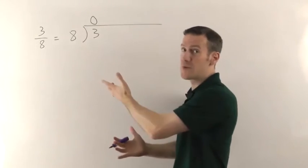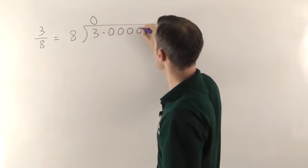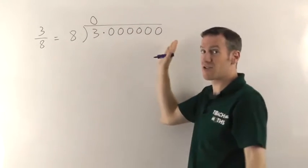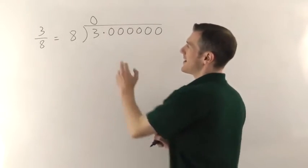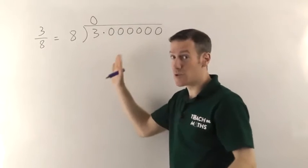3 could be written as 3.000000, as many zeros as you like really. And now I've got the digits to do my remainders and things and actually do the division.